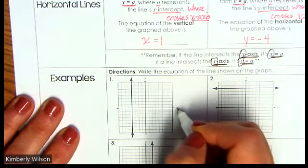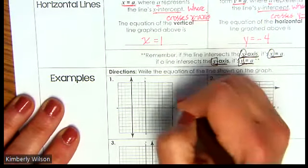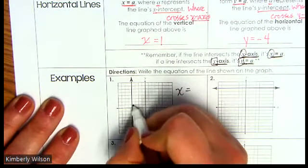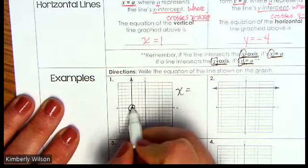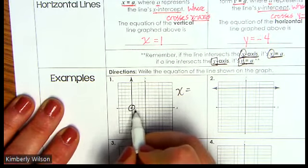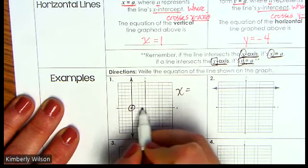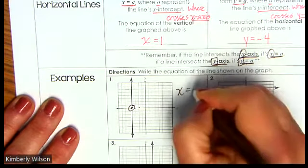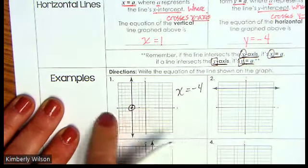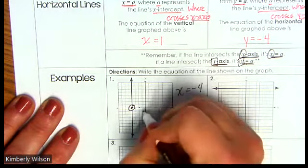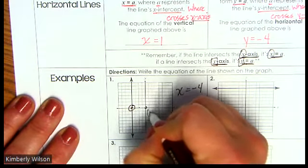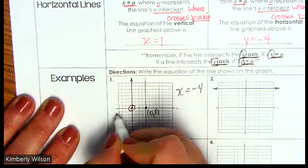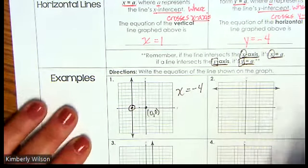Well, this is crossing the x-axis, so therefore this is going to be x equals — and now I've got to see where it's crossing. Right here. So that's at 1, 2, 3, 4 — so that's at negative 4, because this is the negative side of the number line, since this is always 0, 0. So these are my negatives.